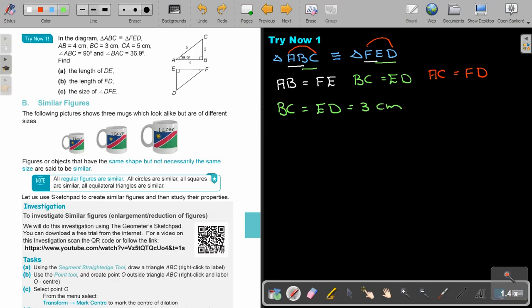And then number B, the length of FD. So, AC equals FD equals, and AC is 5 centimeters.